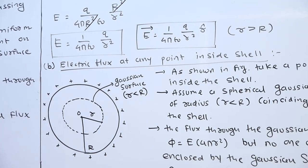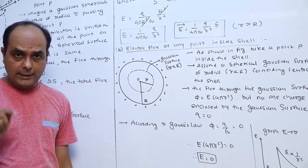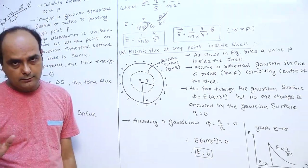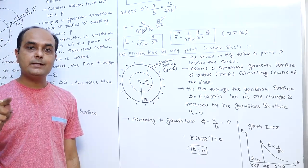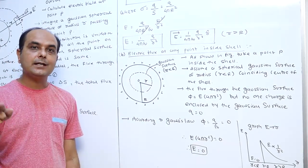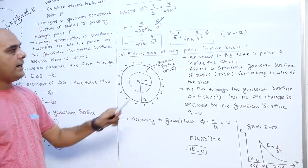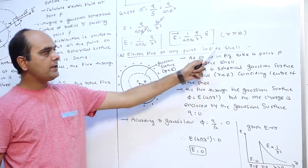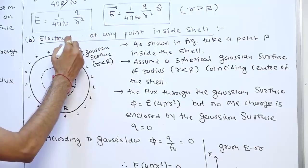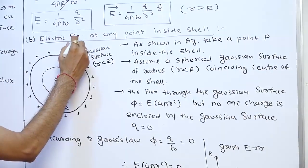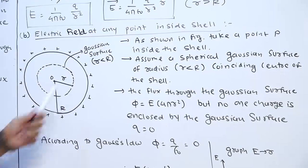The first case — electric field outside the spherical shell — is now complete. Now we want to determine the electric field intensity inside the shell. We consider the electric field at any point inside the shell.